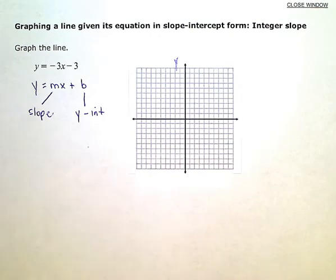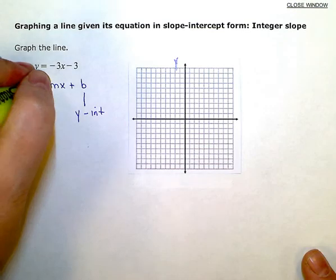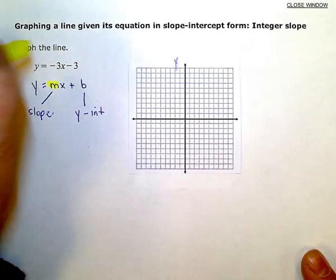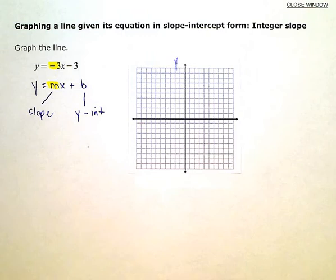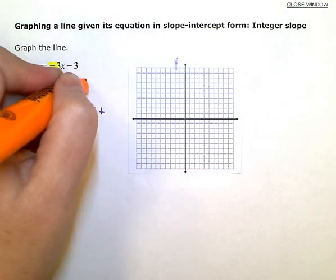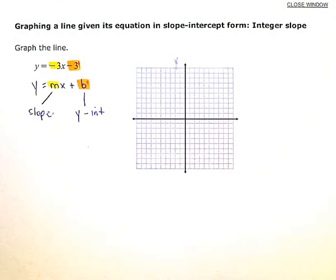So if I look at my line here, the slope, or the m in our general form, is the number that's next to the x. That's the negative 3. The y-intercept is the constant term or the number that doesn't have the x on it. It's just a number.